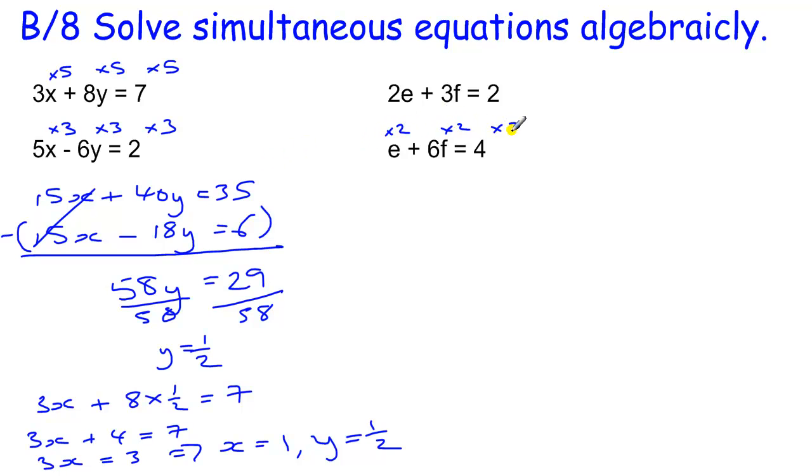So I times everything in this equation by 2 and that will give me 2e plus 12f equals 8. Now, I am going to subtract these two equations. So to try and keep the numbers positive I am actually going to put this top equation underneath this one before I subtract, because if I take 3f from 12f that gives me a positive number whereas if I take 12f from 3f I get negatives. Just a little bit of manipulation to make things easier.